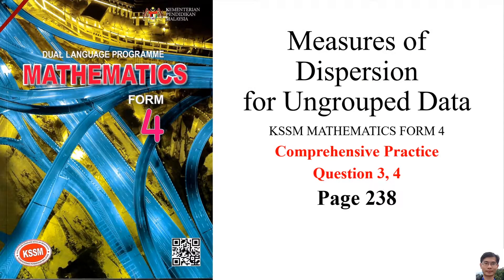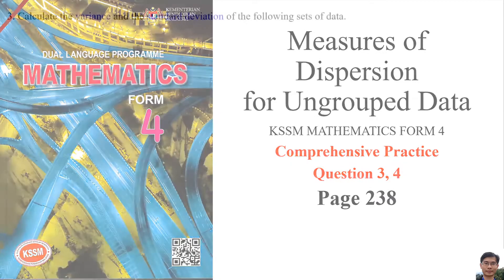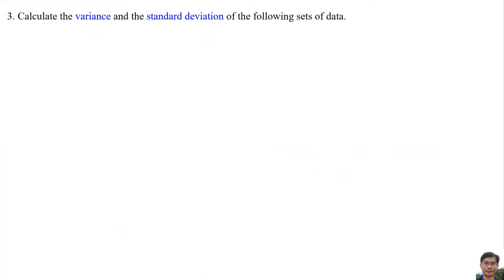Measure of Dispersion for Ungrouped Data — KSS Mathematics Form 4, Comprehensive Practice Questions 3 and 4, Page 238. Question 3: Calculate the variance and the standard deviation of the following set of data, part A.